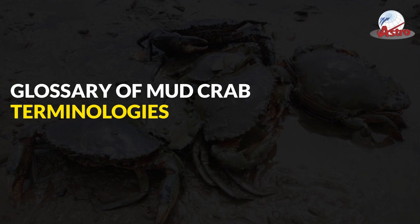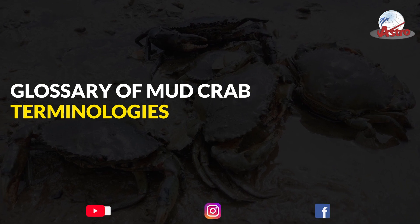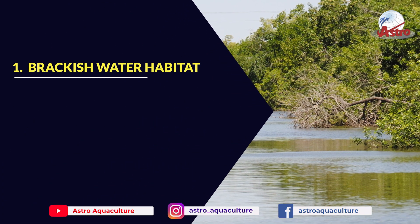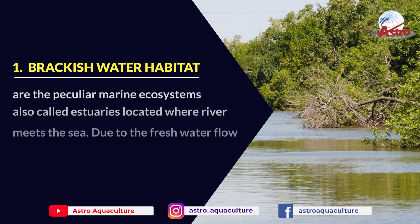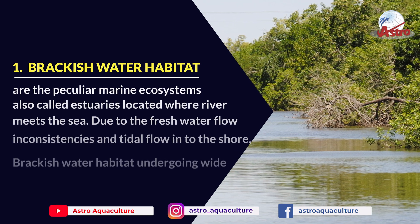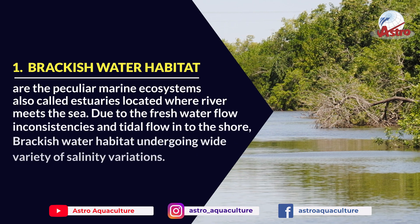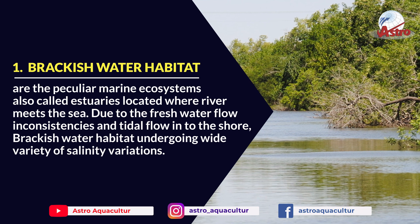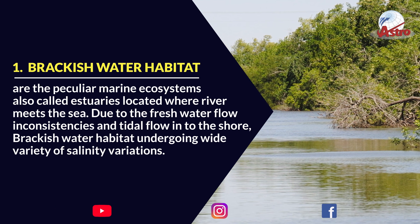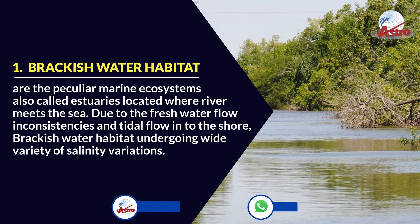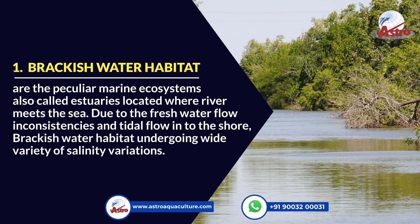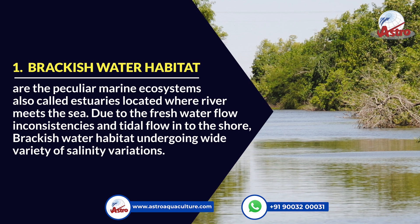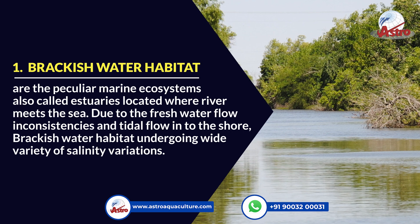Glossary of Mud Crab Terminologies. Brackish water habitat are the peculiar marine ecosystems also called estuaries, located where river meets the sea. Due to the freshwater flow inconsistencies and tidal flow into the shore, brackish water habitat undergoes a wide variety of salinity variations.